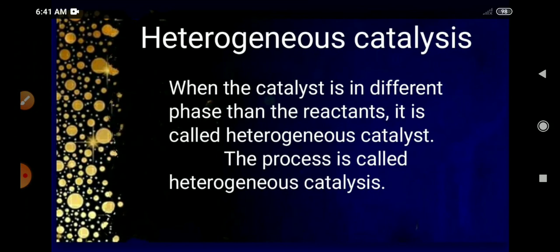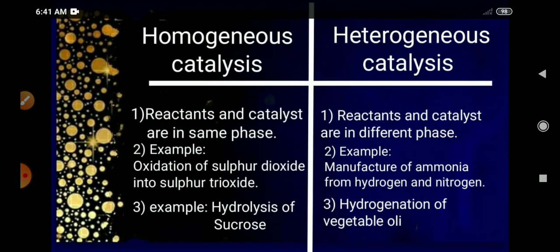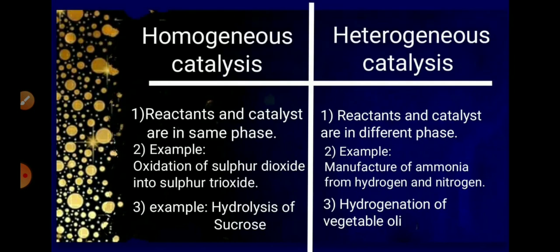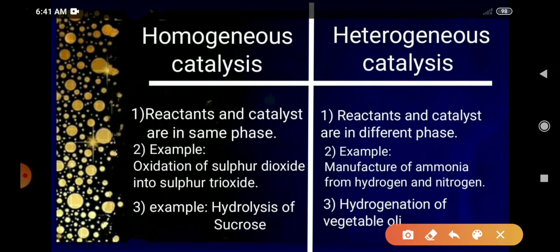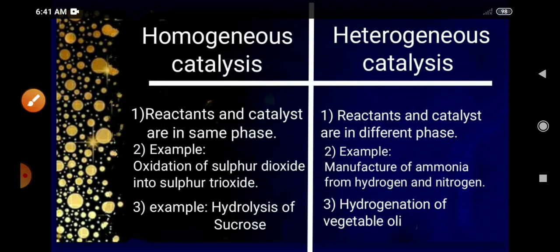Heterogeneous catalysis is defined as: when the catalyst is in a different phase than the reactants, it is called heterogeneous catalysis. To compare: 'homo' means same, 'hetero' means different. When the reactant and catalyst are in the same phase it is homogeneous, and when in different phases it is heterogeneous. Examples of homogeneous catalysis include oxidation of SO₂ and hydrolysis of sucrose. Examples of heterogeneous catalysis include manufacture of ammonia and hydrogenation of vegetable oil.